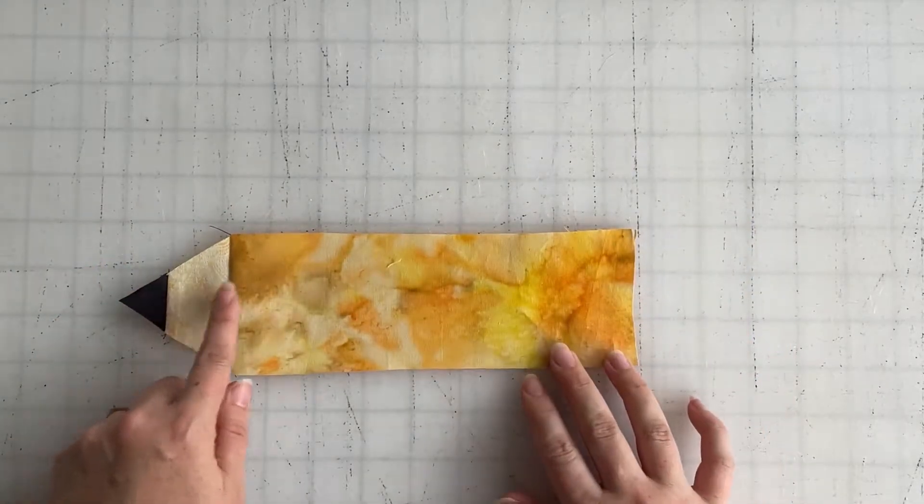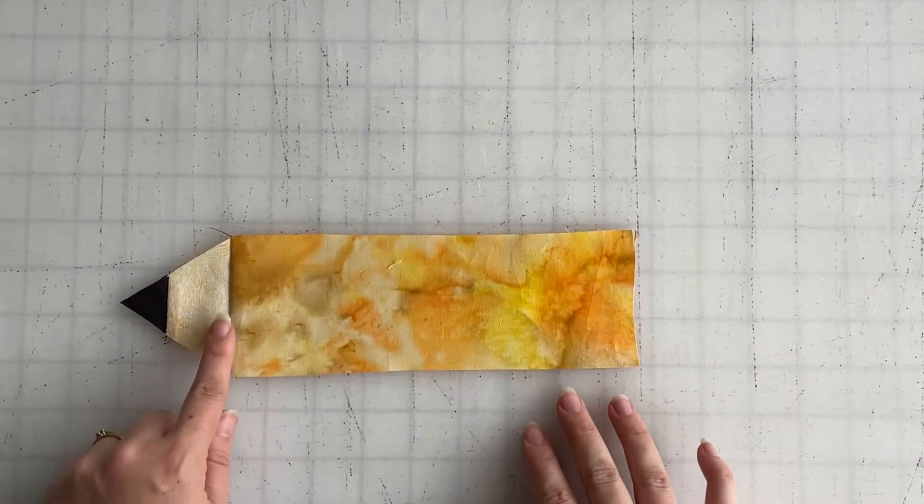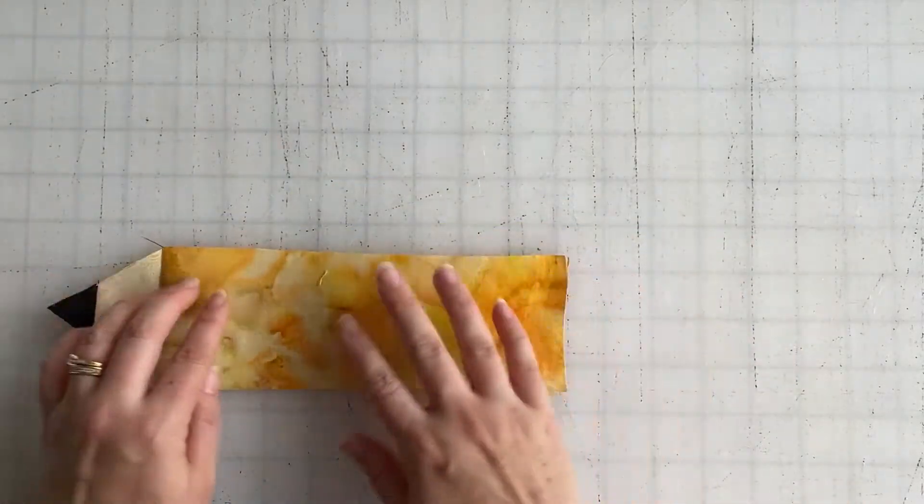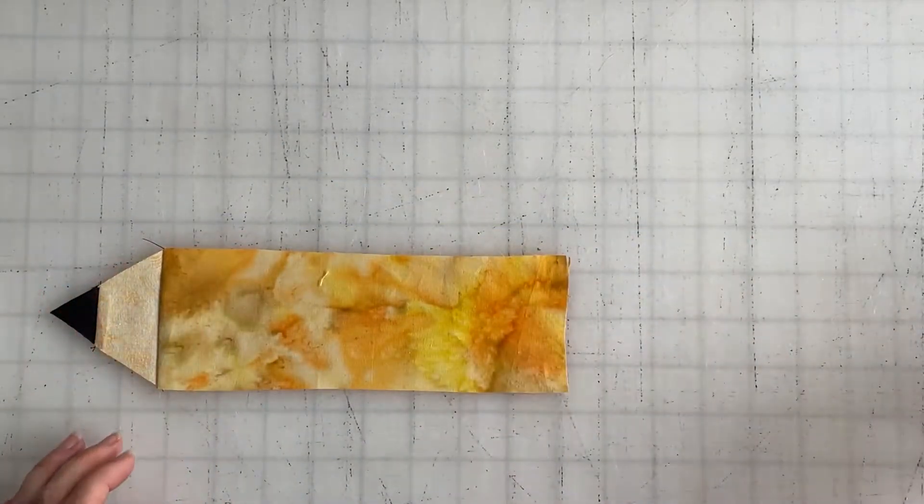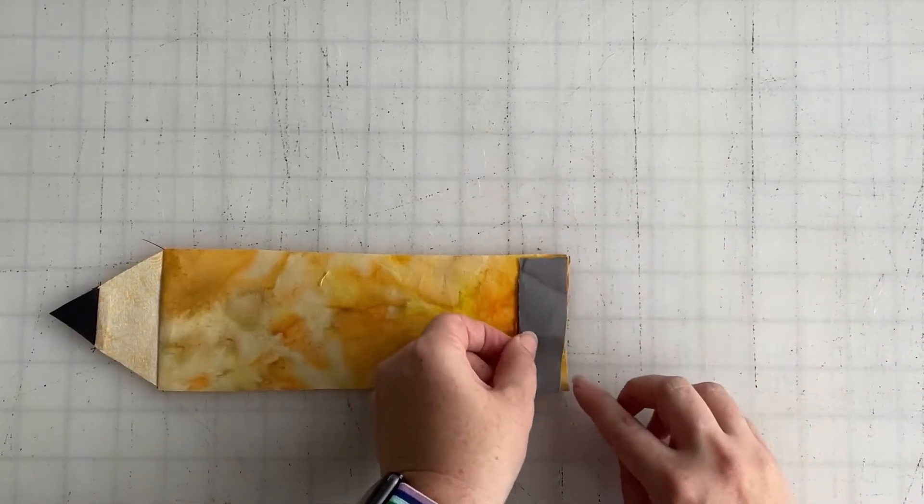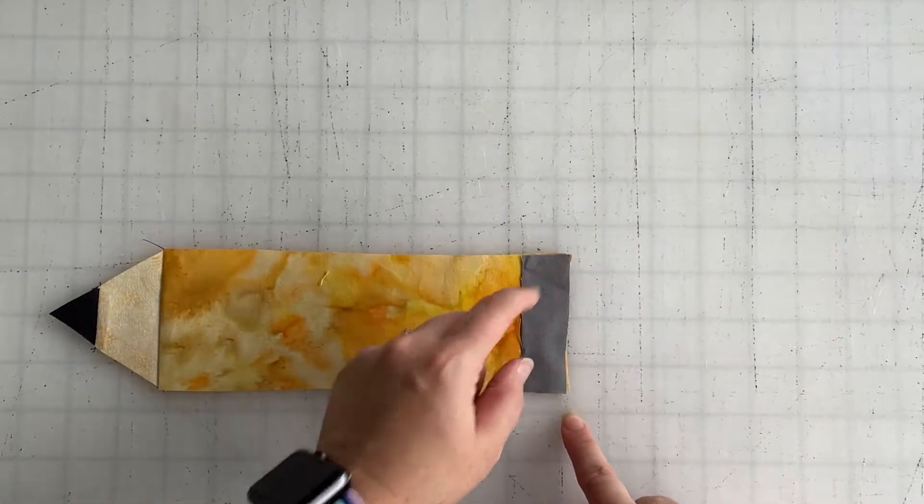Make sure you press your pieces, it's super important on this pattern. So we're going to be pressing between every step. We're going to take piece number four now and attach it in the same manner with the right sides facing each other and a quarter-inch seam allowance.